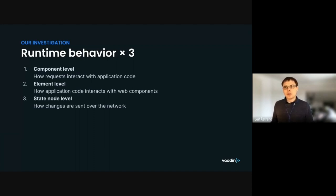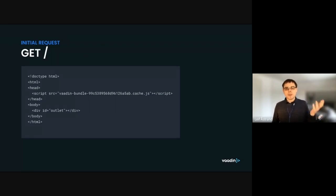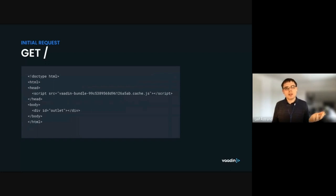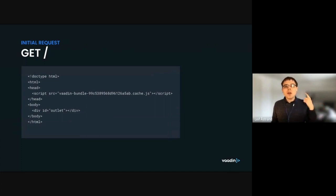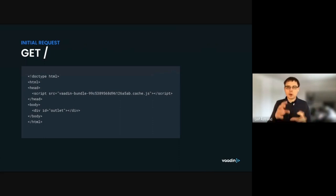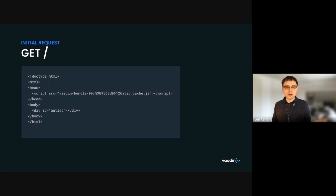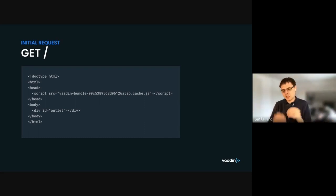With that introduction out of the way, let's look at the actual application. When we open the application, the first thing that happens is we type in the URL in the address bar. The browser sends a GET request to the root of the application, and what it gets back is basically an HTML document with a single script tag and a single div in the body. The interesting thing is the script tag — it's the Vaadin bundle, which in production mode contains the Vaadin Flow client engine, the Vaadin router, all the web components you're using, the theme, and more — all mashed into a single JavaScript file.